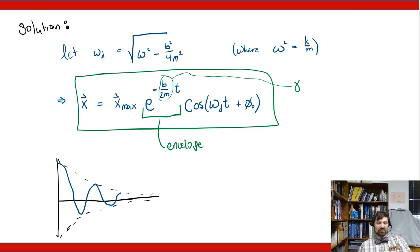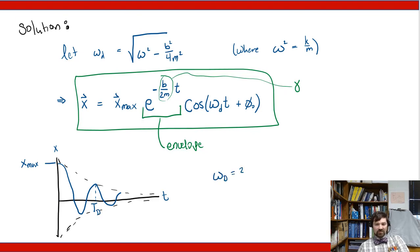The amplitude is getting smaller and smaller. x_max still represents the initial maximum displacement. Omega_d is related to the damped period: omega_d equals 2 pi divided by that damped period. We can now look more carefully at what omega_d represents.